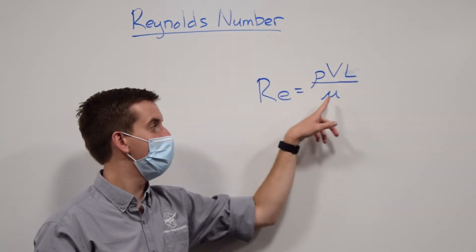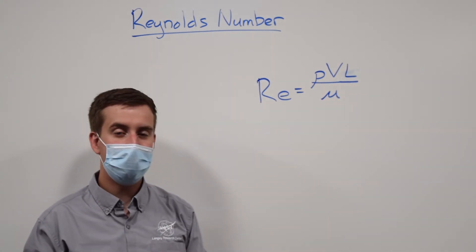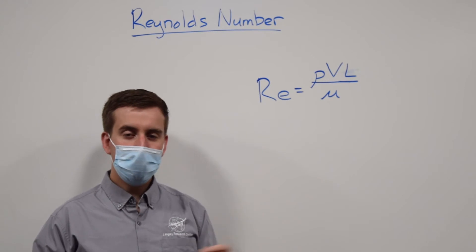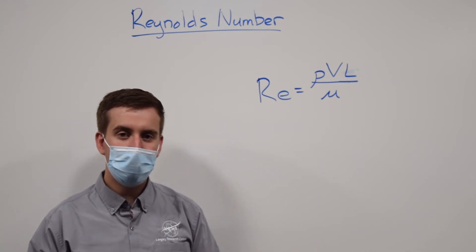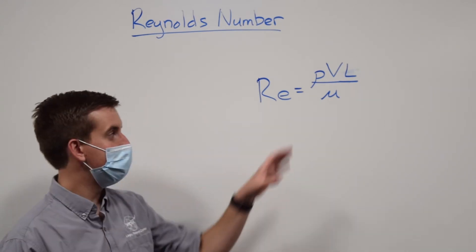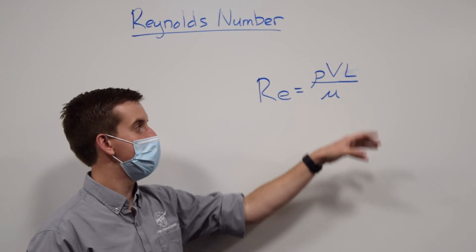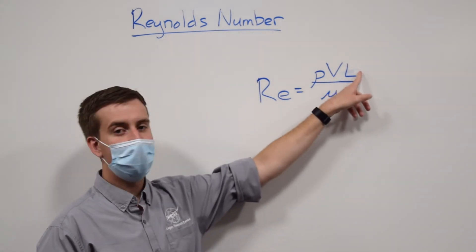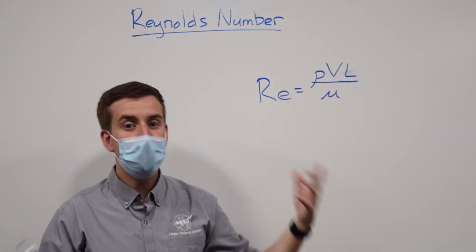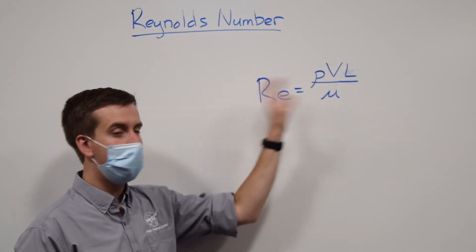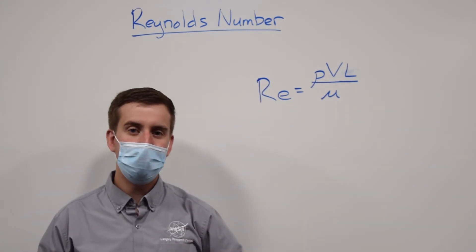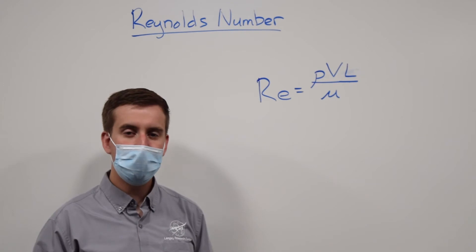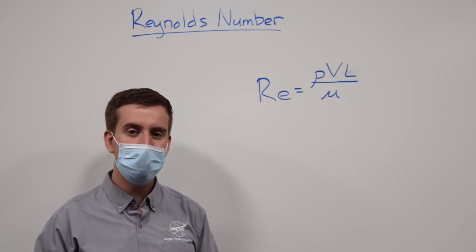And we divide by the dynamic viscosity of the fluid. The reason why the Reynolds number is so useful is because if you take all of the units — velocity is meters per second, length is meters, and you do that for all the terms — all of the units cancel out. So the Reynolds number is a unitless number.